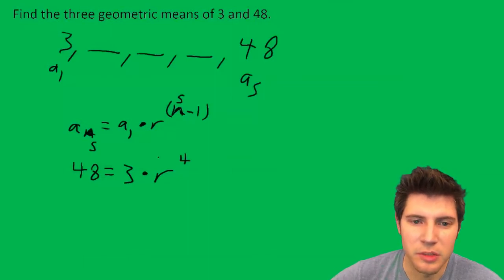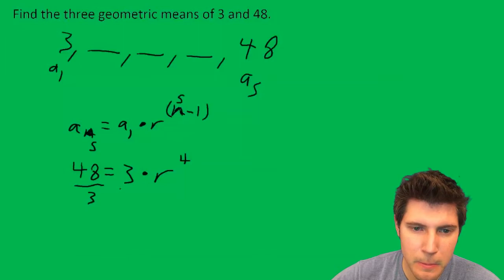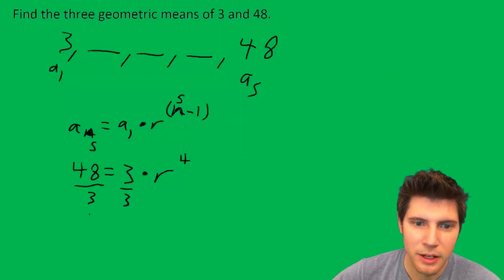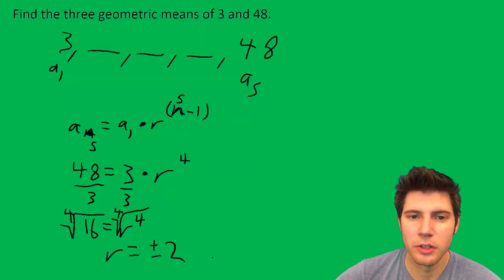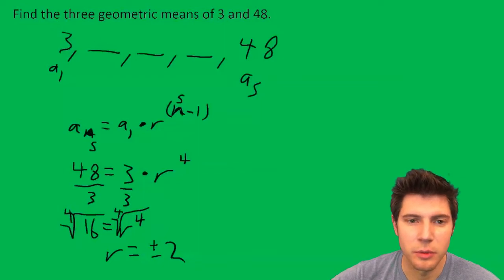I'm going to divide both sides by 3 and I get 16 equals R to the fourth. If I take the fourth root of both sides, I get R equals plus or minus 2.